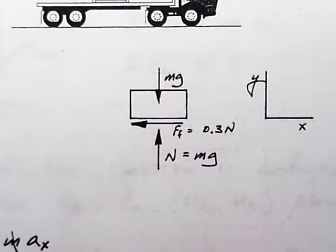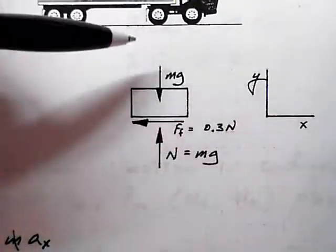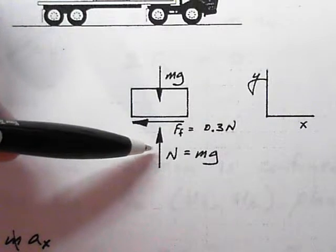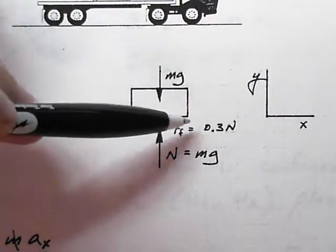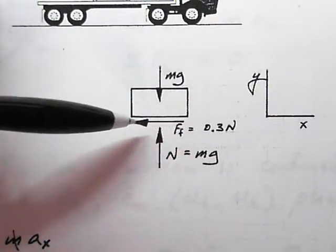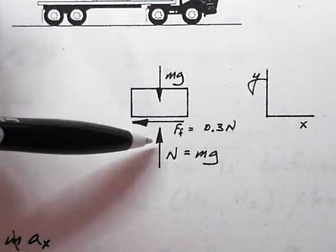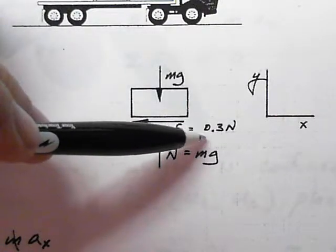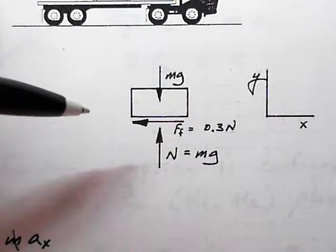The free body diagram would show the weight acting down mg, the normal force acting upward, and a friction force resisting motion. If it's fixing to slip, the friction force is μ times N.